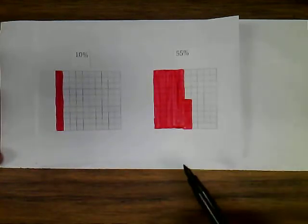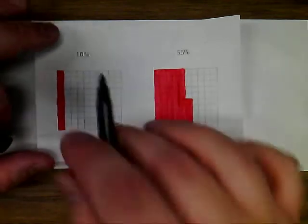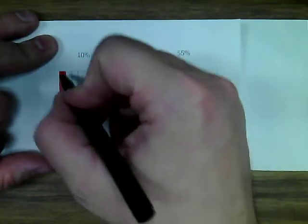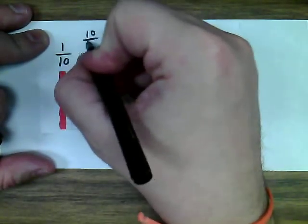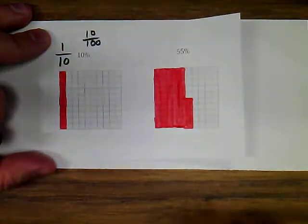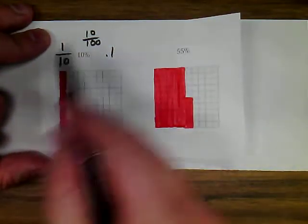But think about this, obviously this is showing 1 tenth is shaded in, or 10 over 100 is shaded in. Also, you could think of it as .1 shaded in. All of these are equivalent.